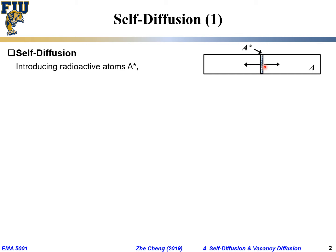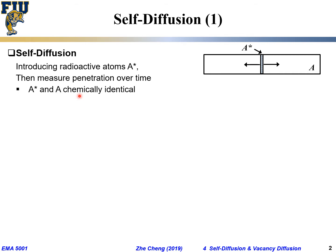The radioactive atom will diffuse out, will randomly walk away. Initially I put it at the center, it's going to randomly walk away. We use a radioactive technique that can detect how far away these radioactive tracers spread out over time — we measure the so-called penetration, the concentration profile over time.